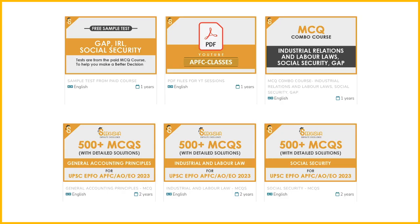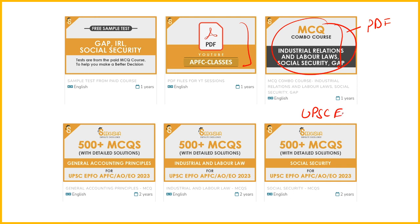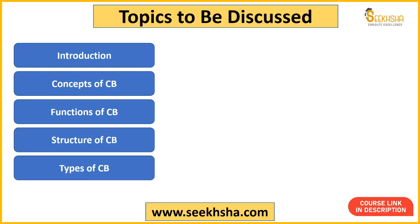These are the courses guys — industrial relations and labor law, social security, and a combo course where you'll get MCQs. In this combo course there's one more addition: you'll get PDF files. You can access YouTube lectures without the course, but if you take this course you get PDF files. Currently we are also giving 50% off for UPSC EPFO if you use the discount code. Link in the description. In this particular lecture, we'll discuss the introduction, concepts, functions, structure, and types of collective bargaining.